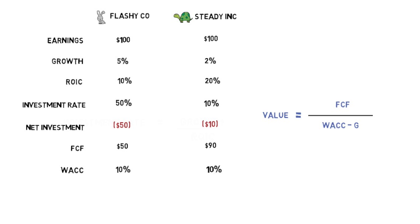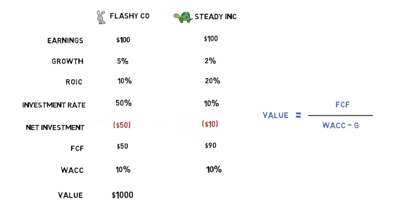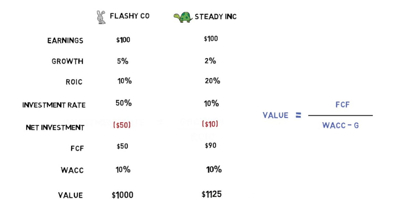Plugging all the numbers into this formula, we see that FlashyCo is worth $1,000 while SteadyInc is actually worth slightly more at $1,125. So slow and steady wins the race — despite the fact that SteadyInc is growing more slowly, it's actually a more valuable company because it requires less capital for a given amount of growth.